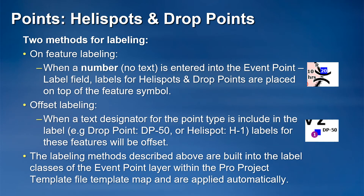According to GeoOps and the PMS 936 symbology event point table, helispots and drop points are the only two point feature types that must always be labeled. There are currently two methods for labeling drop points and helispots. On-feature labeling places the numeric-only identifier for the drop point or helispot centered over the map point symbol. Offset labeling is used when a text designator — H for helispot, DP for drop point — precedes the numeric identifier. The event point layer within the Pro project template APRX distributed with the incident folder structure is configured to automatically place labels using these two methods.